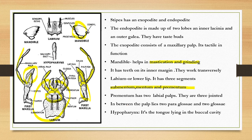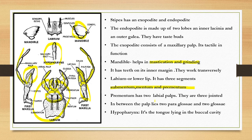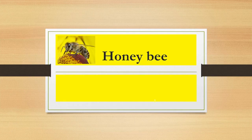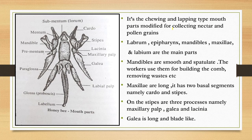Along the labial palp there are paraglossae — this is the paraglossa. They would have two glossae: this is the glossa, outer glossa and inner paraglossa. Now moving on to the hypopharynx — this is the hypopharynx, which actually resembles a tongue in the buccal cavity. It is connected to the salivary gland.